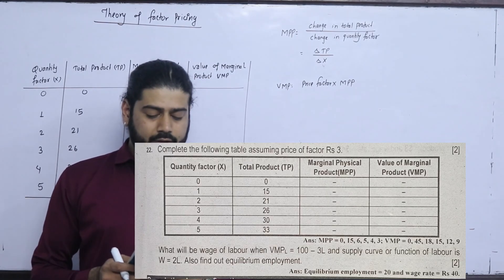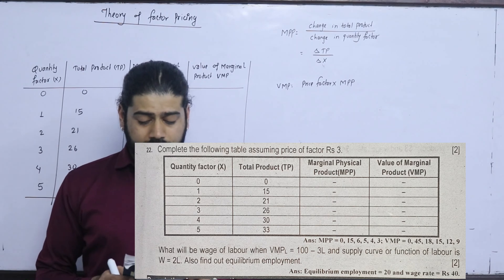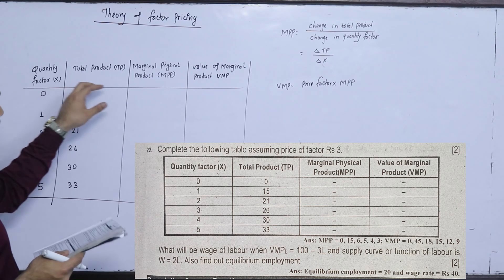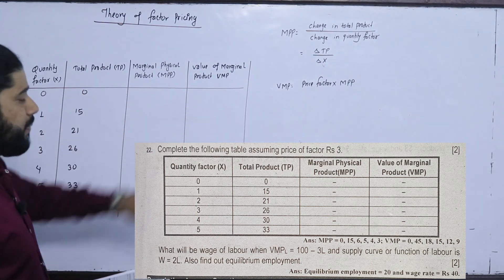Another question. Now, what is the question? I will complete the following table. Assuming the price of factor is Rs. 3. The quantity factor reacts with total product TP, marginal physical product MPP, and the value of marginal product VMP.